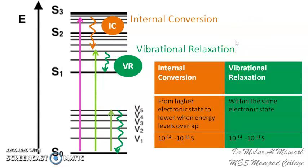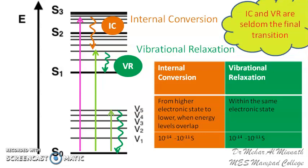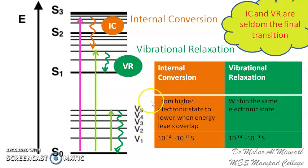There is one more non-radiative transition: inter-system crossing. It is important to note that internal conversion and vibrational relaxation are not the final transitions. From the lowest vibrational level of the first excited state, other transitions are possible — including fluorescence, phosphorescence, and inter-system crossing. Internal conversion and vibrational relaxation occurring within the excited states are intermediate steps, whereas transitions back to the ground state vibrational levels represent the final step.